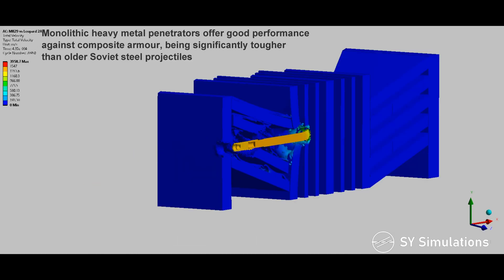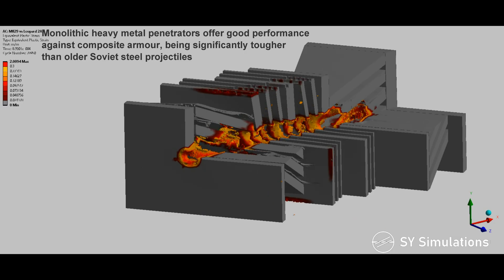Monolithic heavy metal penetrators offer good performance against composite armor, being significantly tougher than older Soviet steel projectiles.